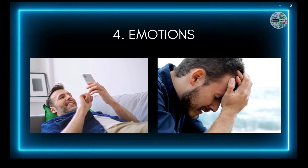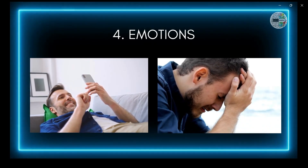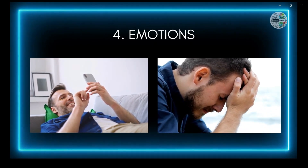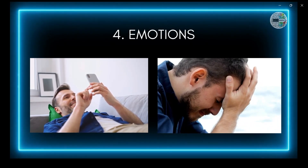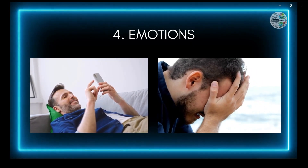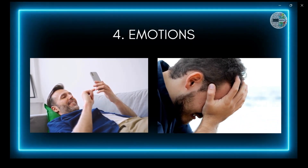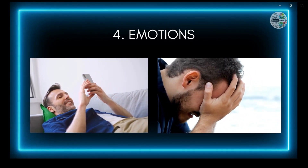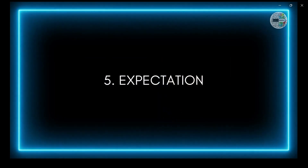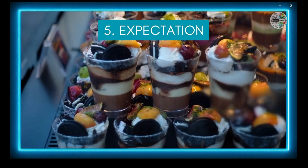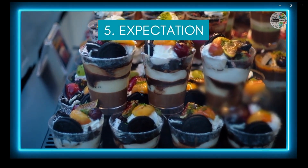Number four: emotions. Your feelings at a particular moment can change how you see things. If you're happy, you might see things in a more positive light, but if you're upset you might perceive them differently.